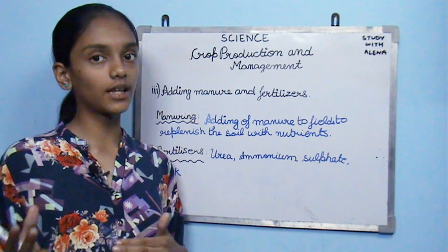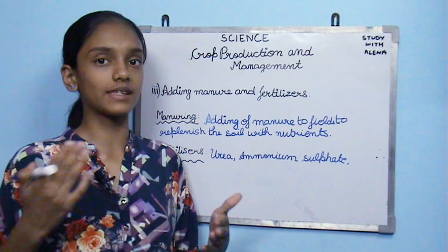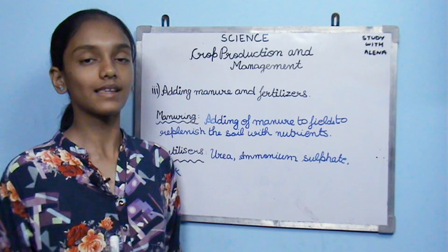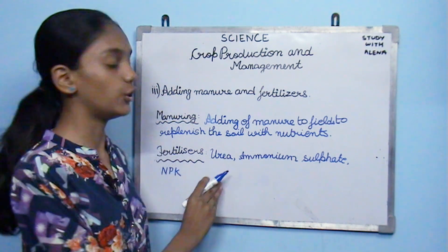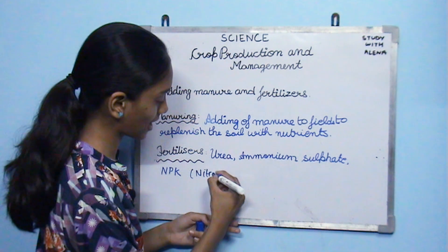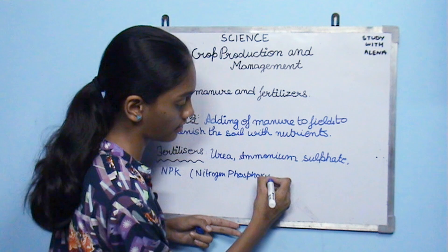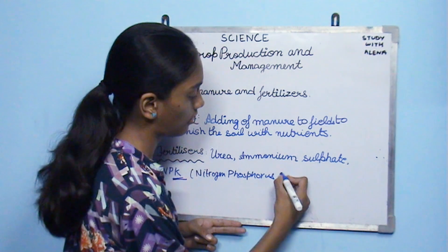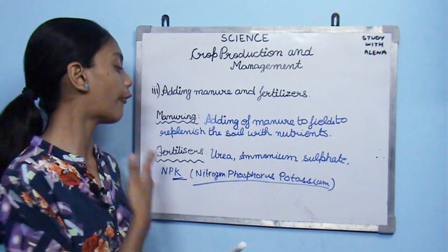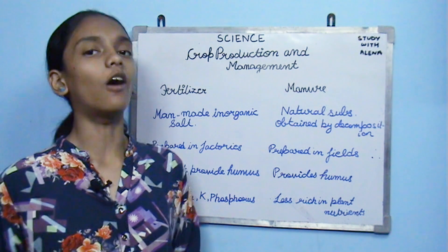Manuring is the addition of manure to fields to replenish soil with nutrients. Manure is made from the decomposition of plants, animals, and other organic matter. Fertilizers are chemicals added to the soil. Examples of fertilizers include urea, ammonium sulfate, and NPK — where N stands for nitrogen, P stands for phosphorus, and K stands for potassium.